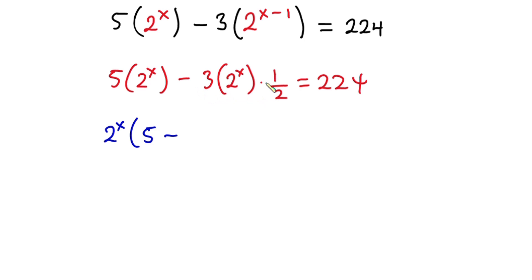And this is equal to 2 to the 4th. Now let's simplify what is in the parenthesis. From here we have the LCM to be 2. 2 times 5 is 10 minus 3, and this is equal to 2 to the 4th.